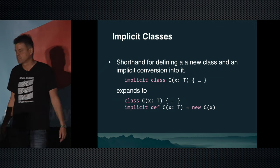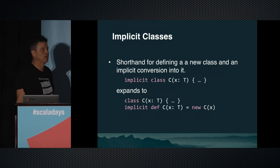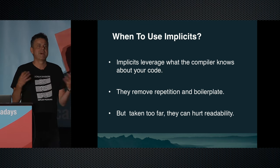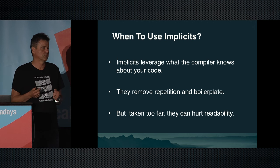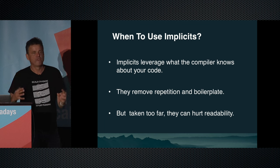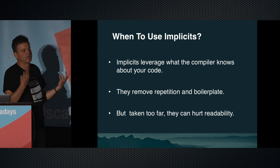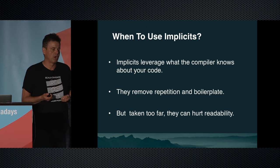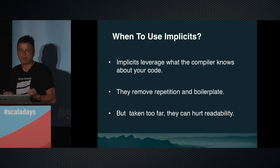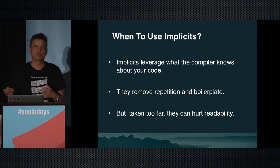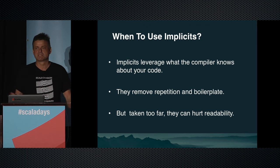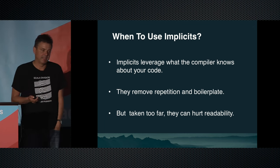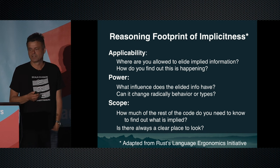Now we've seen the space of language features. The question is when should we use what? Implicits are very powerful because they leverage what the compiler knows about your code — certain values have certain types and would fit in slots you leave open when you define implicit parameters. That's a great means to remove repetition and boilerplate, but when taken too far it can also hurt readability. How do you reason about when it's a good design to add implicits?